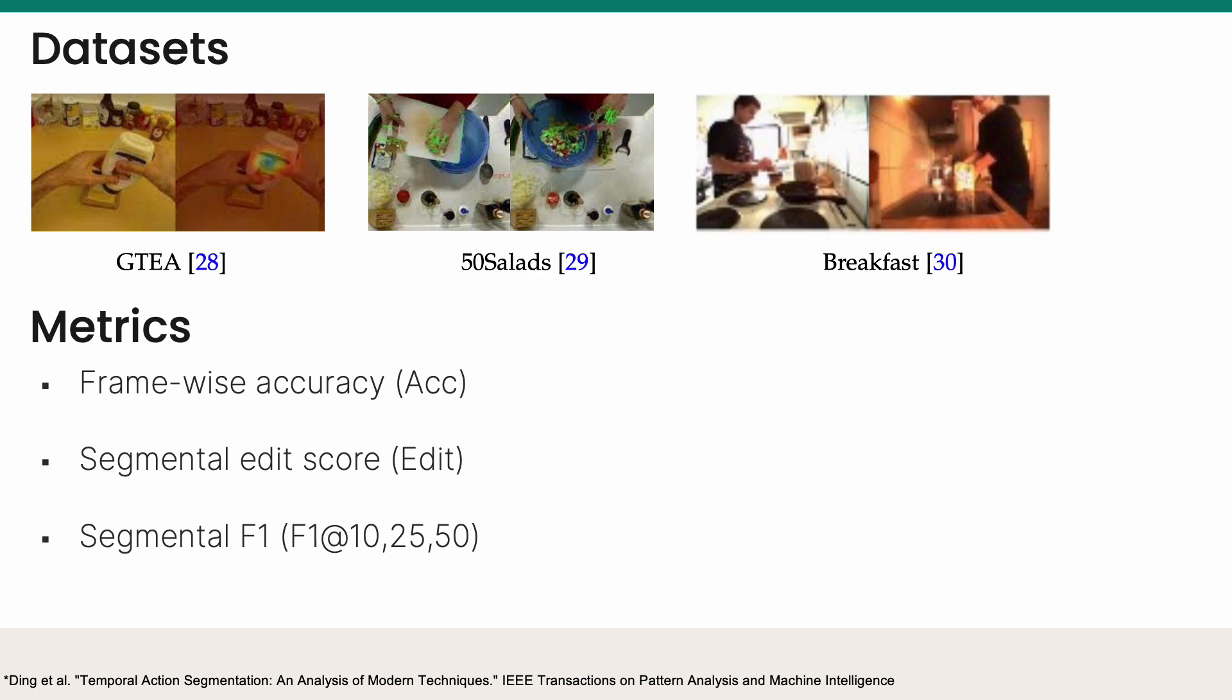Segmental F1, which compares the intersection over union of the predicted and ground-truth segments. This score penalizes over-segmentation and is less sensitive to the exact location of the boundaries.